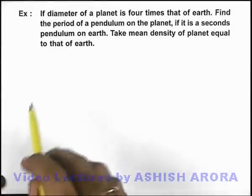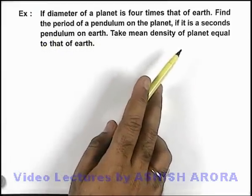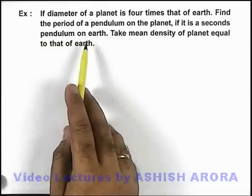In this example we are given that if the diameter of a planet is 4 times that of the Earth, we are required to find the period of a pendulum on the planet if it is a seconds pendulum on Earth.